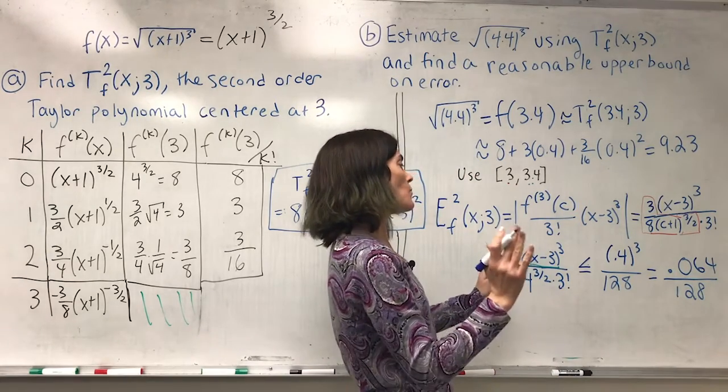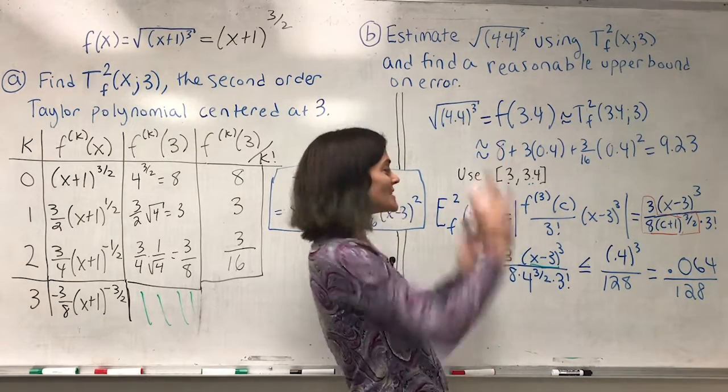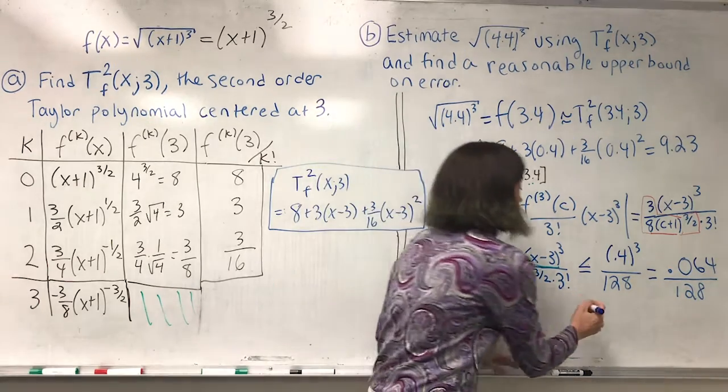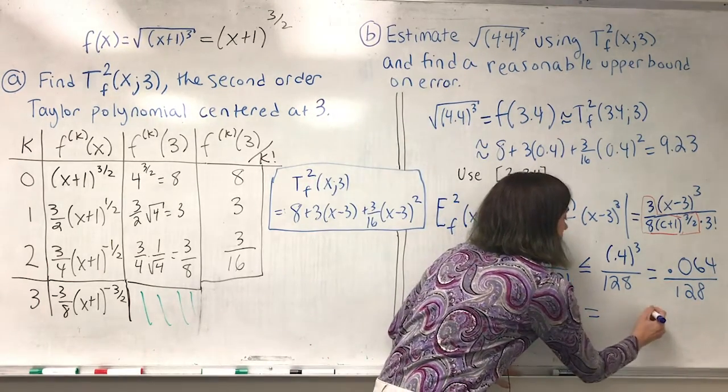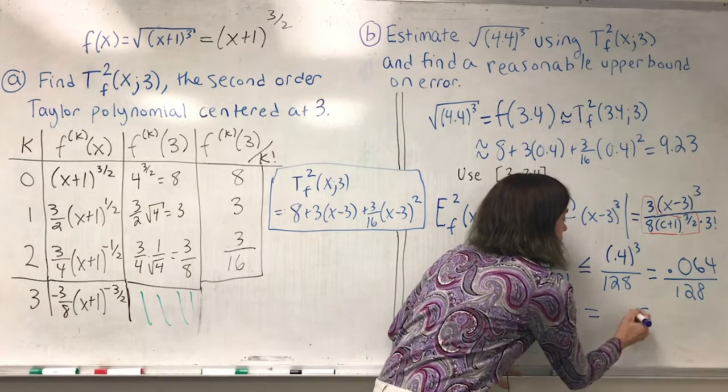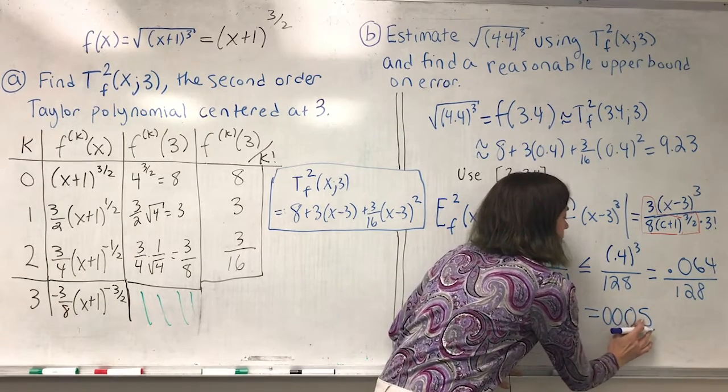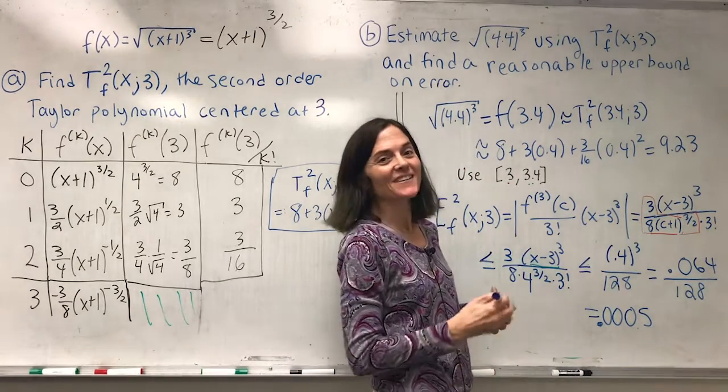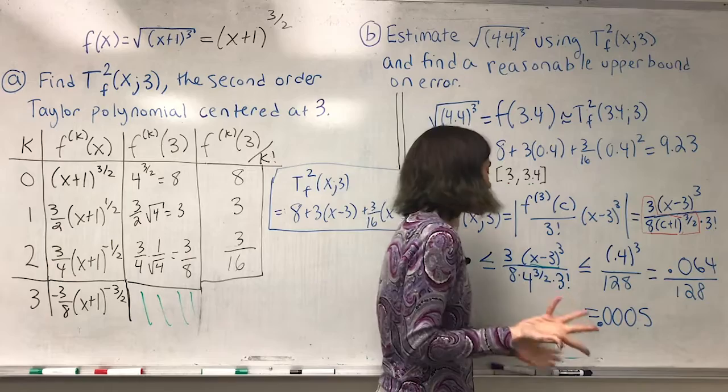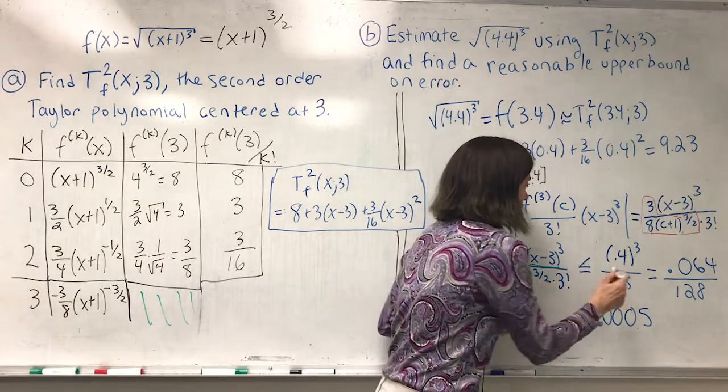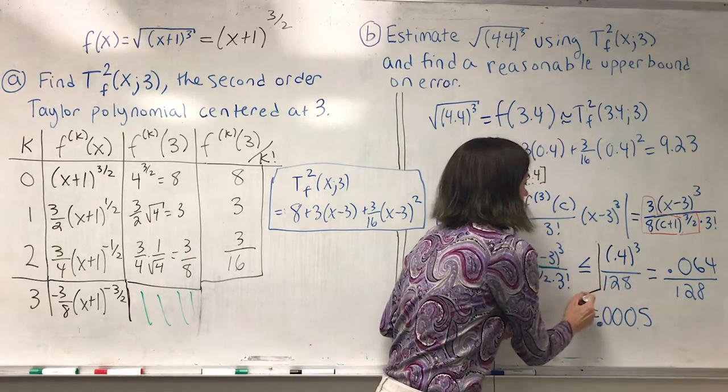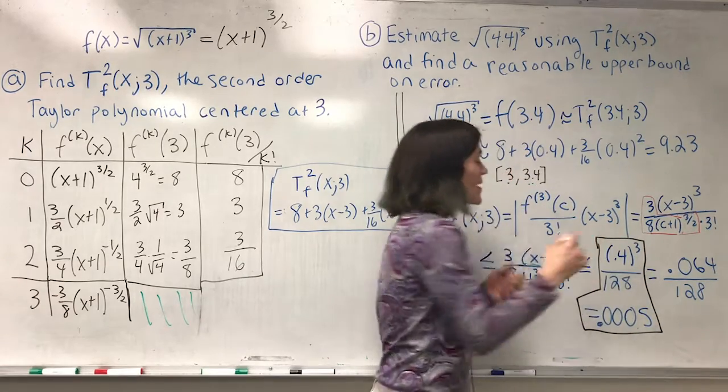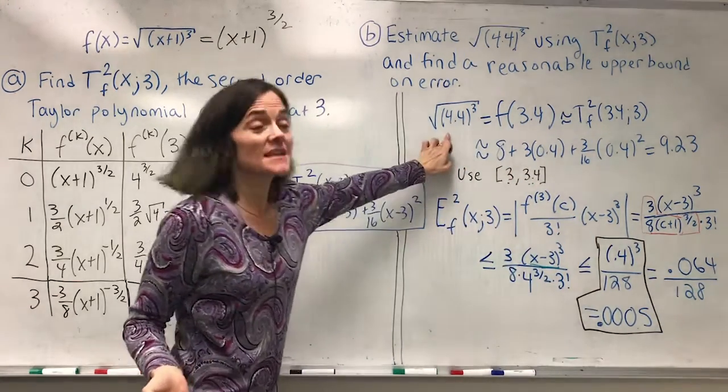And then, well, this also is not too bad. 64 over 128 would be a half. But then I can again move the decimal place over 1, 2, 3 to here. And this is the upper bound on error entirely as a decimal. So either one of these answers is perfectly fine.